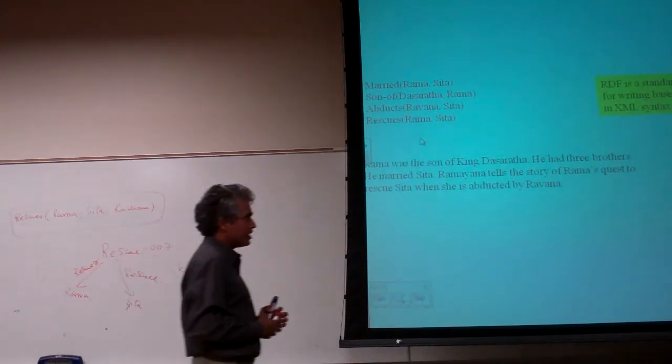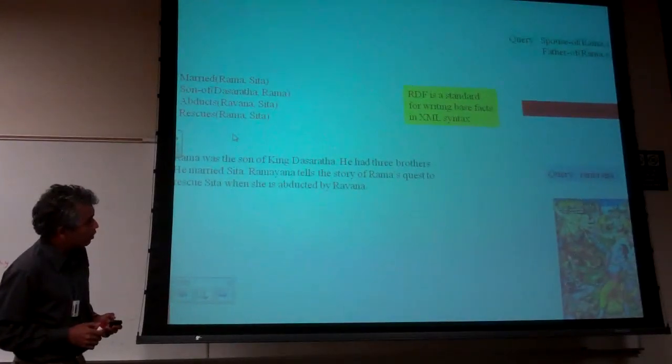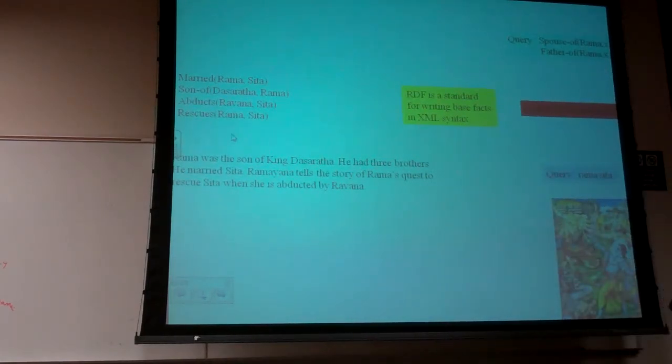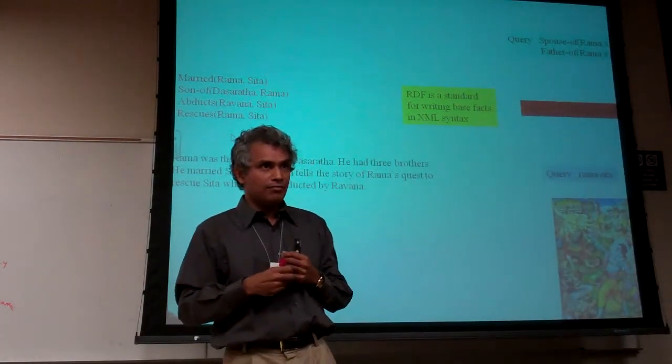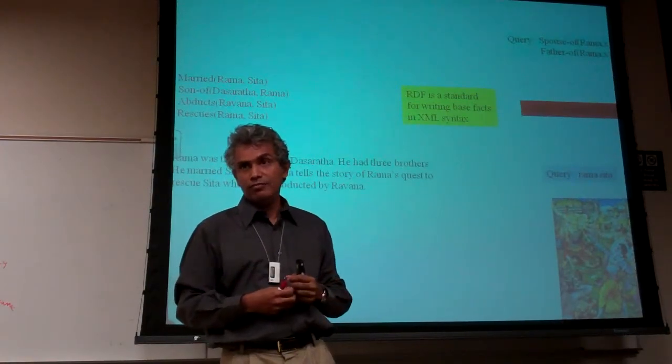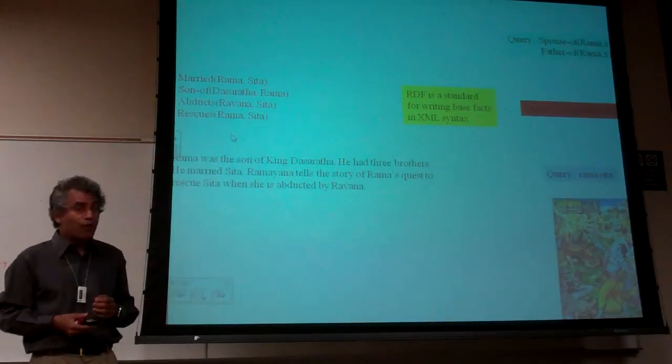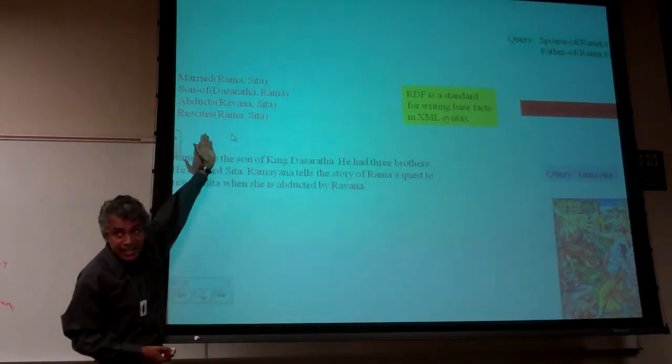The last thing is I will have the following question: spouse of Rama X and father of Rama X. Those are my questions. Tell me who is the spouse of Rama, and tell me who is father of Rama. Once again, you know the answer. A machine has no clue. There is no spouse of, and there is no father of. Now, I can say, what I should really be doing to be able to answer these queries is to add more data here.